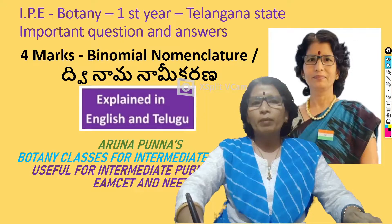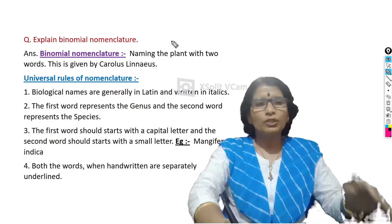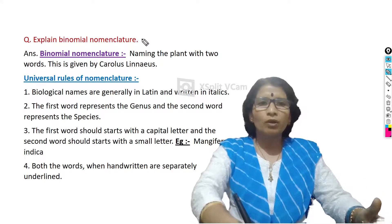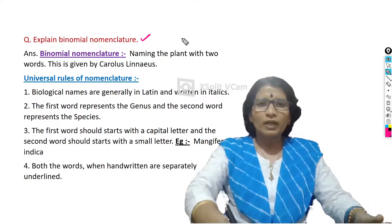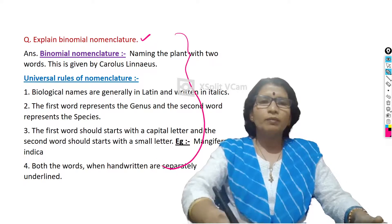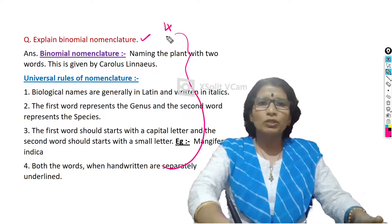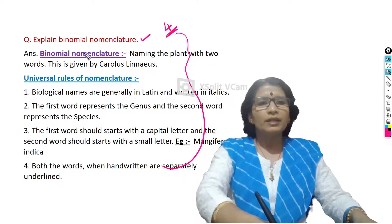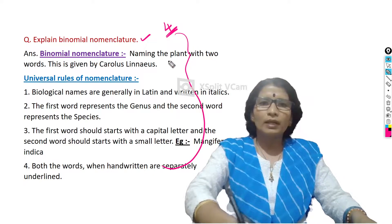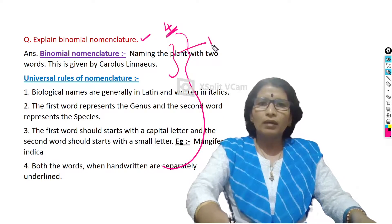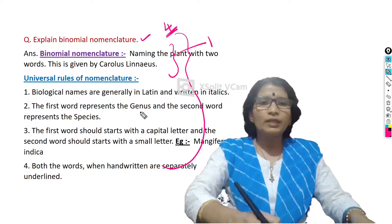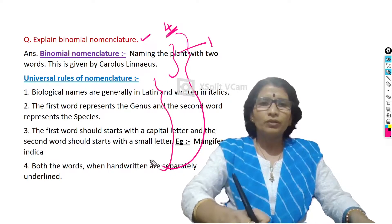The topic is Binomial Nomenclature. Usually on this topic, you will get this question in the examination: 'Explain binomial nomenclature.' If you get this question, you have to write the answer in this way. This is a 4-mark question and answer. By writing the introduction part of binomial nomenclature and the scientist's name, you will get 1 mark. And by writing any 3 universal rules of nomenclature, you will get 3 marks.